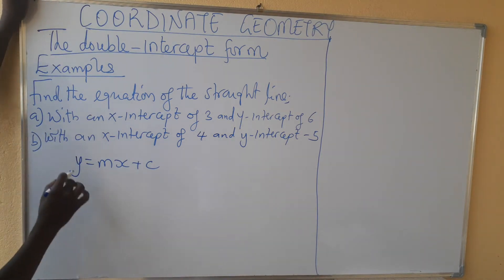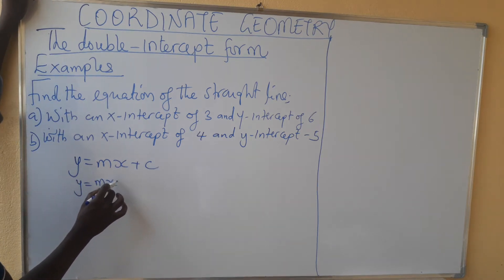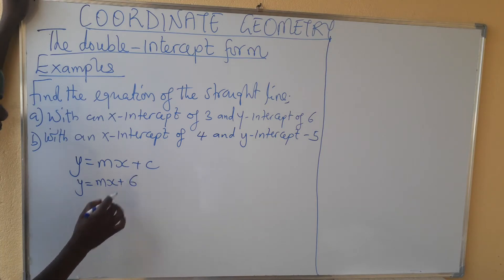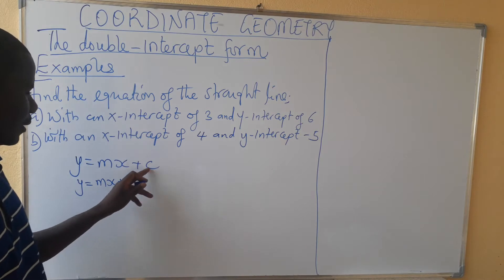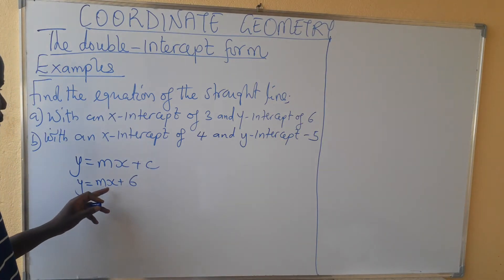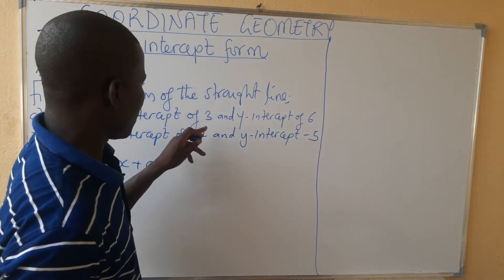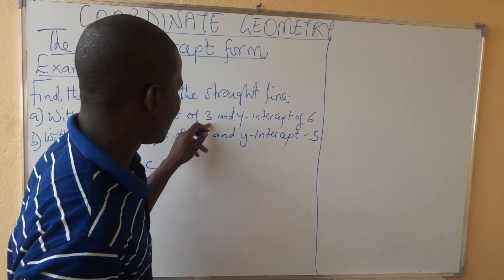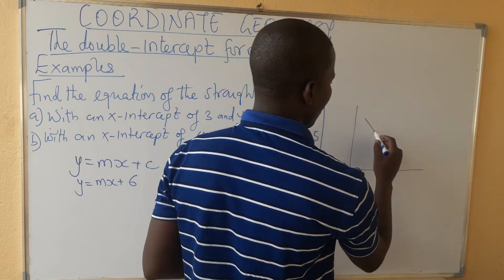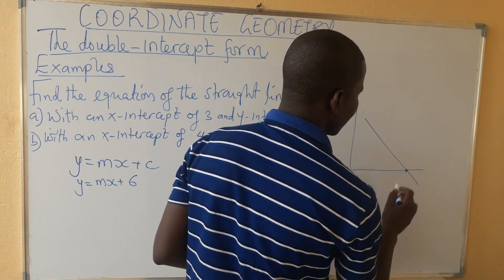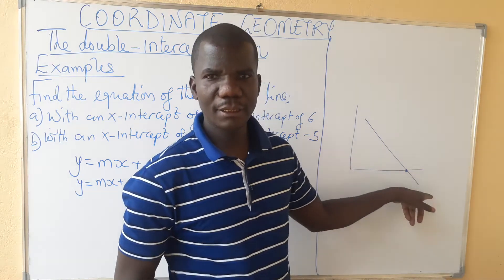So let's go on. The y-intercept is given as 6. Then we look at x — the x-intercept. The x-intercept is the point at which the line cuts the x-axis.